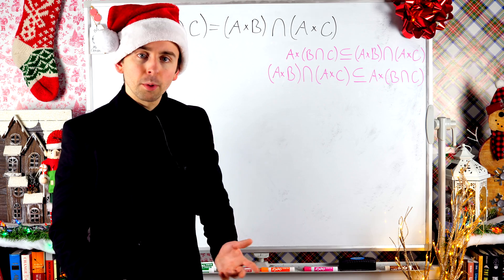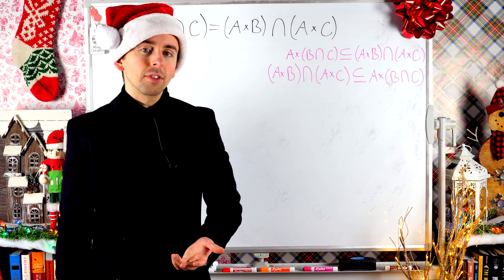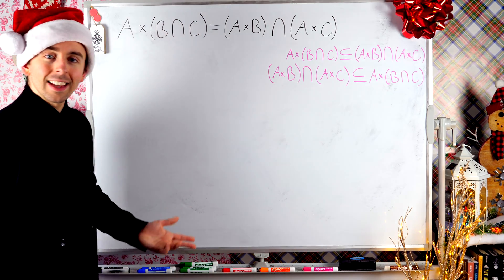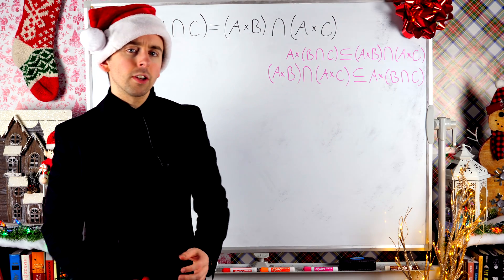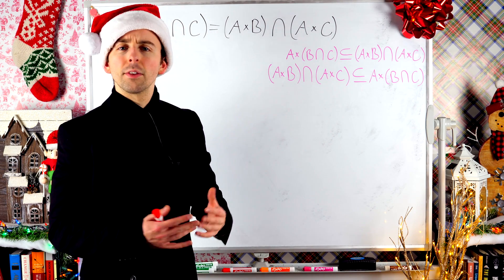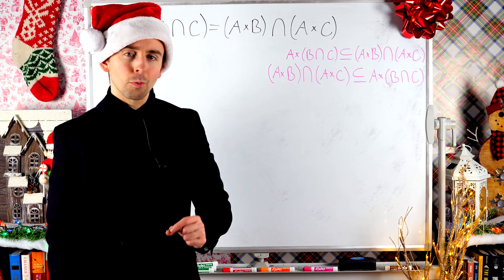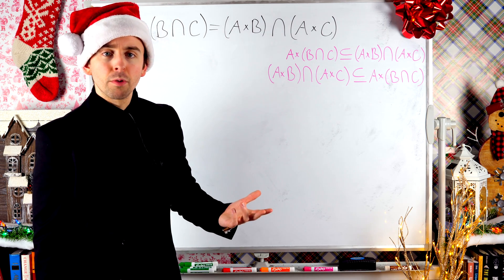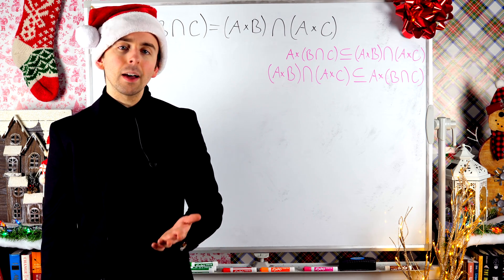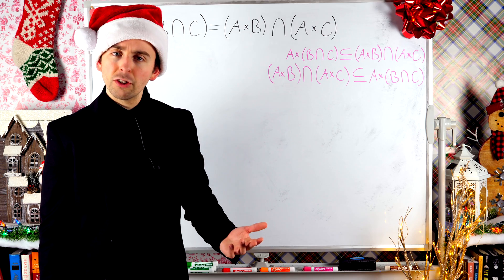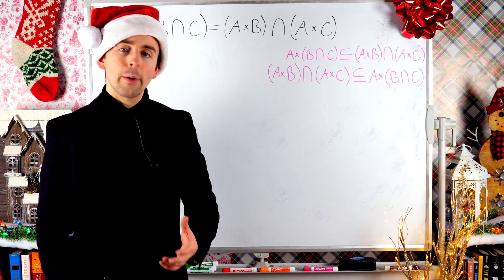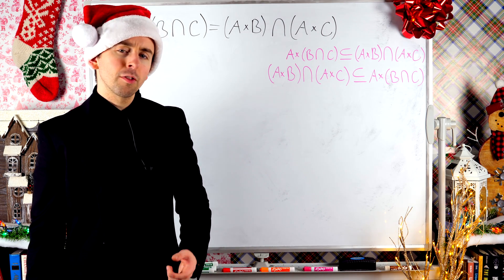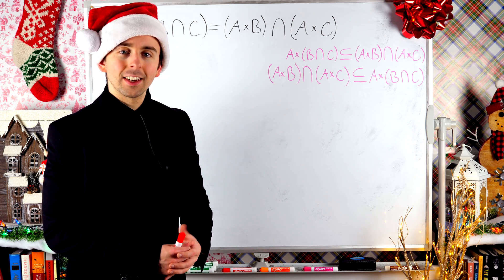You'll need to be comfortable with the definition of set intersection and with the Cartesian product of sets. I'll leave links in the description to my lessons on those topics if you need a recap. This is a pretty basic set theory proof where we just have to repeatedly apply definitions until we reach our conclusion. I encourage you to give it a try yourself before watching the rest of the lesson.